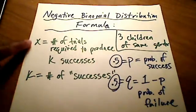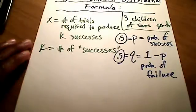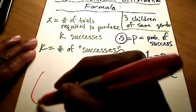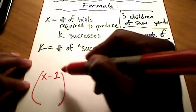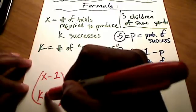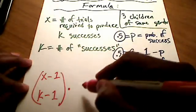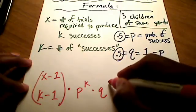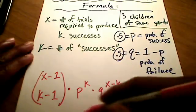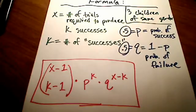So we've got x and k, and we've got little p and little q — we have everything we need. Let me show you what the formula looks like for a negative binomial distribution. It is: x minus 1 over k minus 1, times little p raised to the k, times q raised to the x minus k. There's the formula — it's not very elaborate, but that's the formula for a negative binomial distribution.